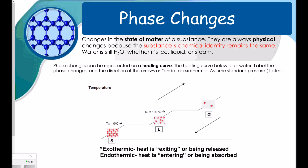Phase changes can be represented on a heating curve like the one below — this heating curve is for water. Label the phase changes in the direction of the arrows as endothermic or exothermic, assuming standard pressure of one atmosphere. You can see the heating curve looks like a stair step, with solid at the bottom, liquid in the middle, and gas at the top.